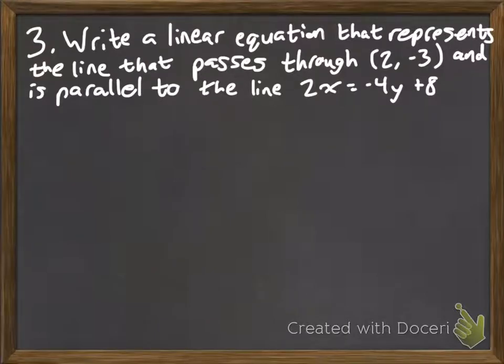Question 3 says, write a linear equation that represents the line that passes through (2, -3) and is parallel to the line 2x = -4y + 8. So some of you have already freaked out. Well, let's look for that key word.